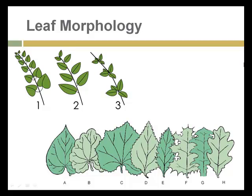Leaf morphology is important for plant identification. One key factor is whether leaves are opposite — branching from opposite sides of the stem — alternate, alternating on either side, or in whorls, with multiple leaves coming from single points on the stem. The other element is leaf shape: the margin, the pattern of the midrib and veins, the presence or absence of teeth on the edges, and the presence of lobes — whether rounded or pointed — are all important identifying characteristics.